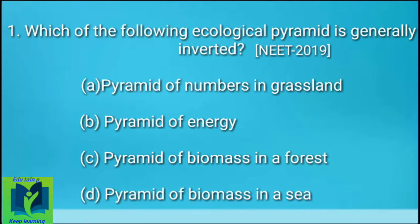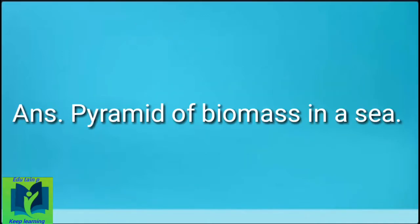Which of the following ecological pyramids is generally inverted? Option A: Pyramid of numbers in grassland. Option B: Pyramid of energy. Option C: Pyramid of biomass in forest. Option D: Pyramid of biomass in a sea.